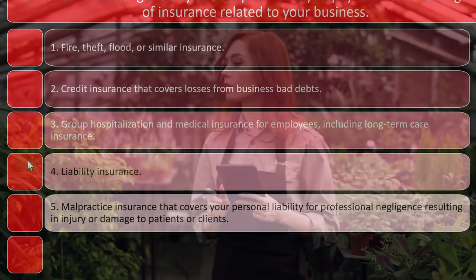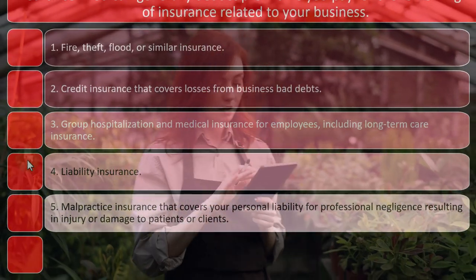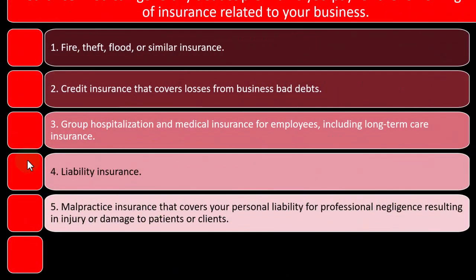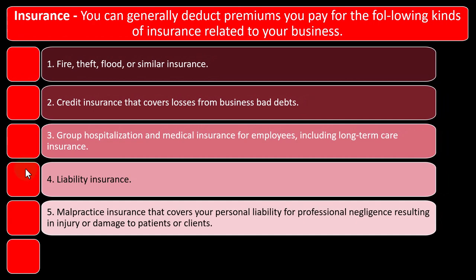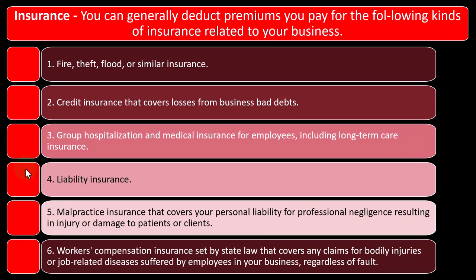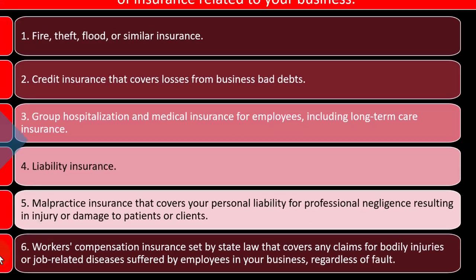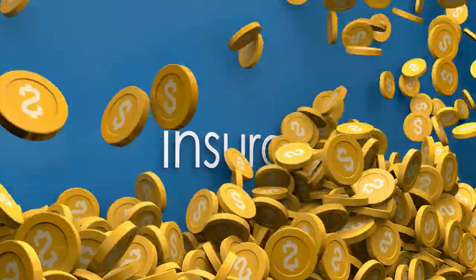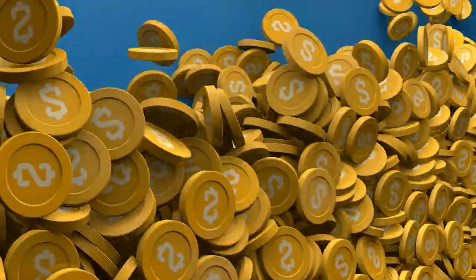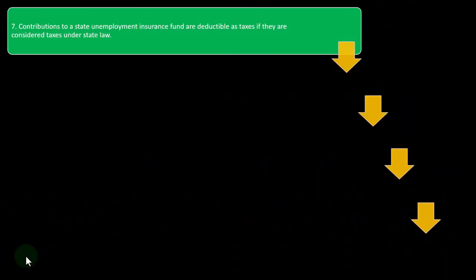Number five is malpractice insurance, which covers your personal liability for professional negligence resulting in injury or damage to patients or clients — specific to industries dealing with patients or clients. Number six is workers' compensation insurance, set by state law, that covers claims for bodily injuries or job-related diseases suffered by employees in your business regardless of fault. This is often mandatory insurance; if you want to do business, you'd have to pay workers' comp, so you'd expect it to be a deductible item.